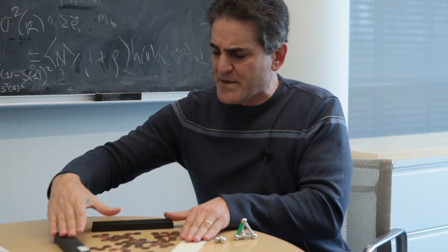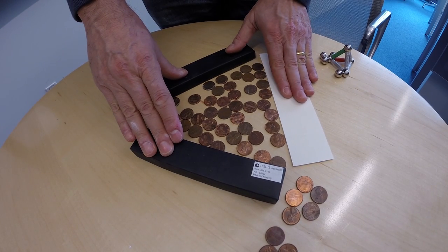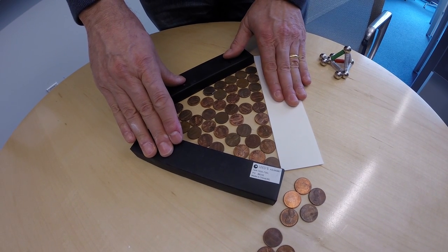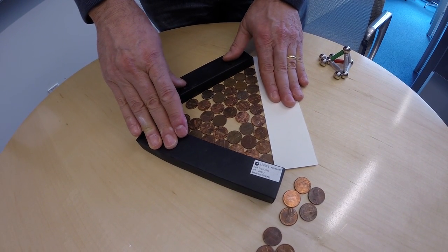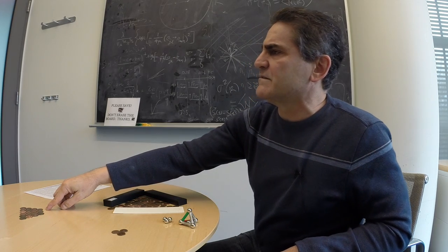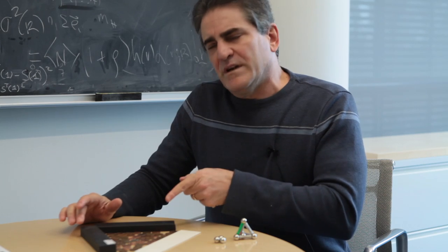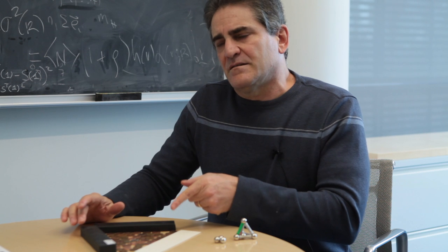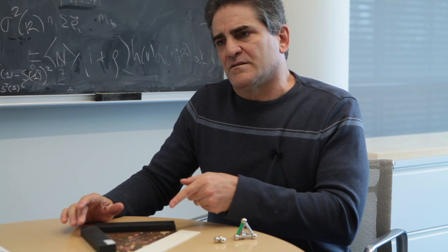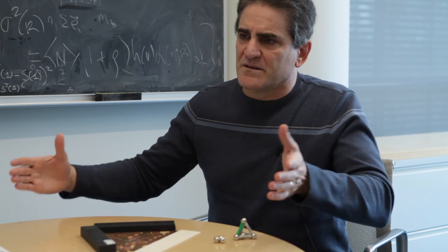Now I'm going to imagine that I have a compression process and I do it rapidly. What I end up getting is not something that's disordered, but it's actually very close to this crystal arrangement. That's one interpretation — that this is in fact the most disordered arrangement that you can have of pennies when you compress them rapidly.